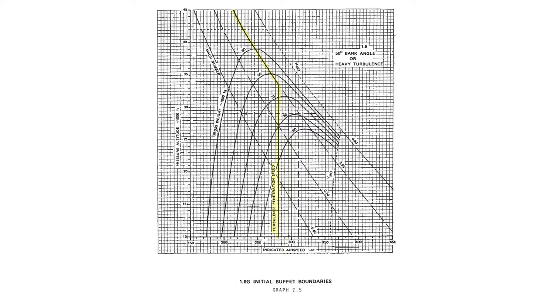One question you may get in the exam is how fast you're going compared to the low speed or high speed Buffet Boundaries when you're flying at the turbulent penetration speed. So let's look at an example of this together. We're going to say we're flying at turbulent penetration speed, we're at 30,000 feet and we're at 65 tonnes.